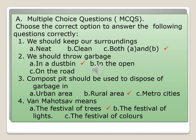Number three: a compost pit should be used to dispose of garbage — in an urban area, rural area, or metro cities. This method of disposing garbage can be used in a rural area only. A compost pit means we make a deep pit, put all the garbage in it, and then cover it to decompose. Number four: Van Mahotsav means — the festival of trees, the festival of lights, or the festival of colors. The correct answer is the festival of trees.